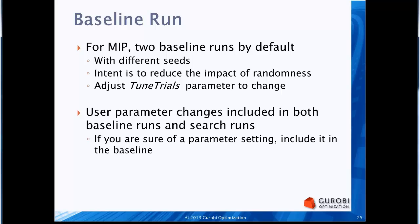Another thing to note about the baseline run: if you set parameters on your model, the baseline run and all subsequent search runs will include those parameter settings. For example, if you know you want to solve the model to a 1% MIP optimality gap instead of the default, you can set the MIP gap parameter to 1%, and that value will be used for the baseline and all subsequent search runs.